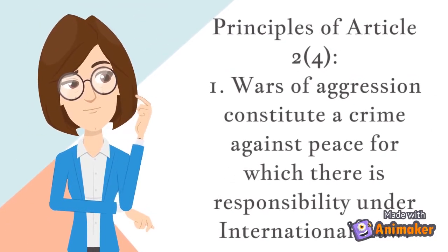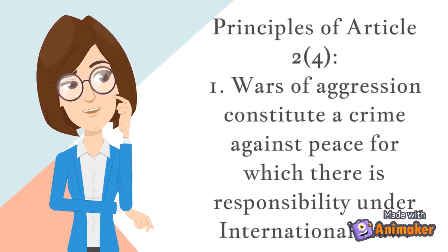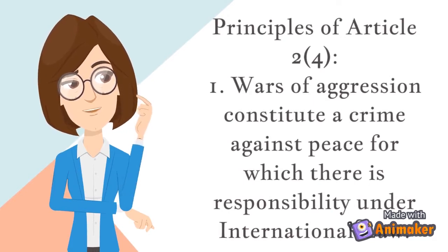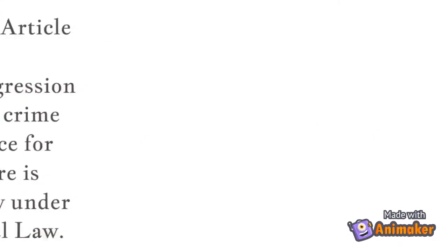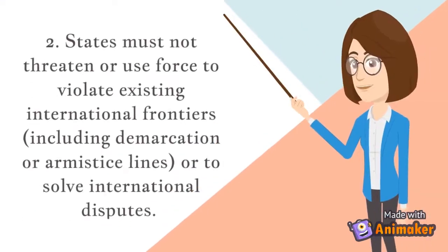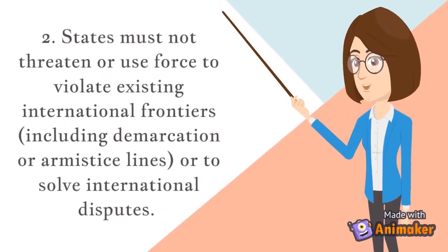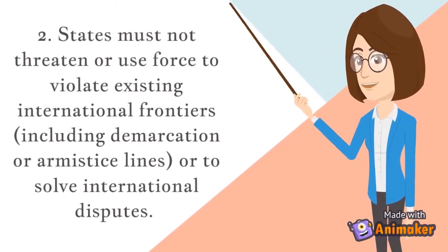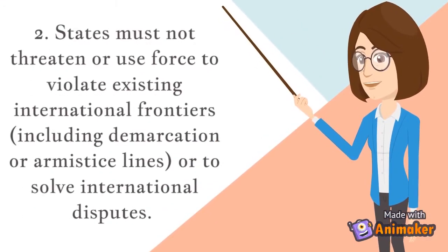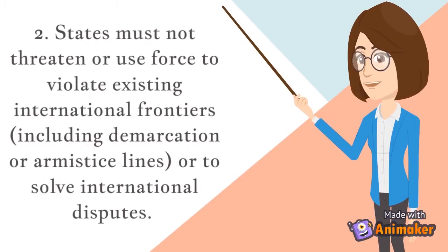The principles derived from Article 2(4) are as follows. First, wars of aggression constitute a crime against peace for which there is responsibility under international law. Second, states must not threaten or use force to violate existing international frontiers, including demarcation or armistice lines, or to solve international disputes.